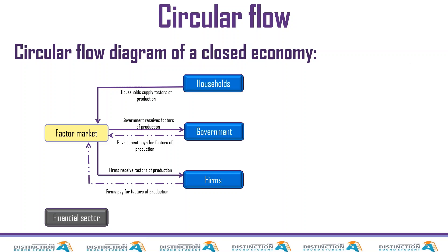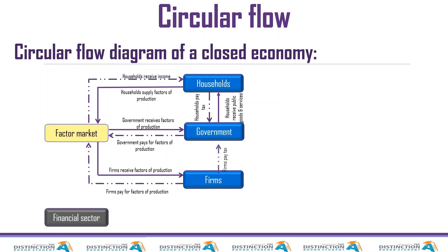Now, what is the first thing that households do when they get their income? The first thing is they pay tax. Why do they have to pay tax? The obvious answer is households receive public goods and services — so they pay tax and in return they get public goods and services. It's not just them; firms also pay tax and in return they also get public goods and services.